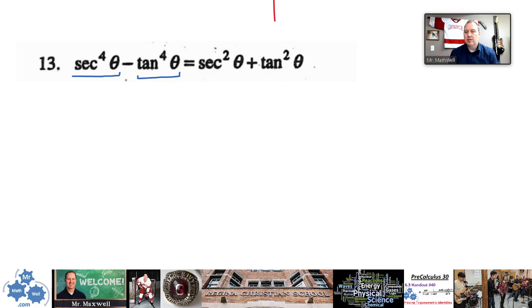And you can treat this as a difference of squares. So the square root for secant to the fourth is secant squared theta, and the square root of tan to the fourth is tan squared.